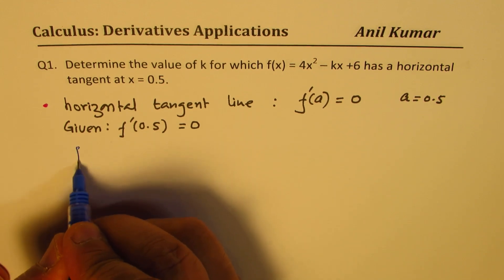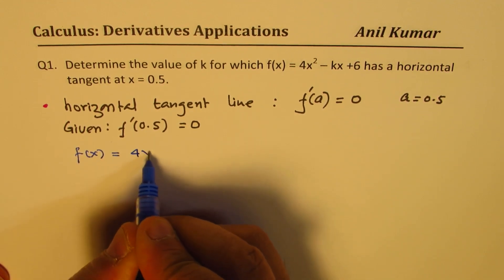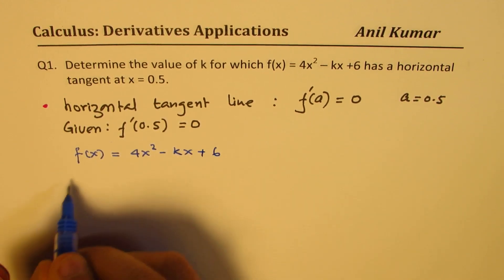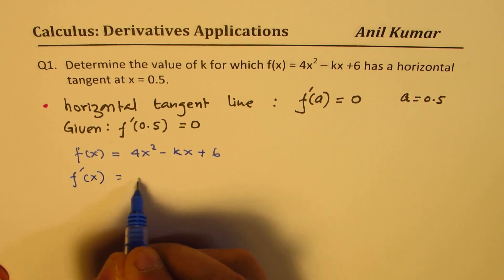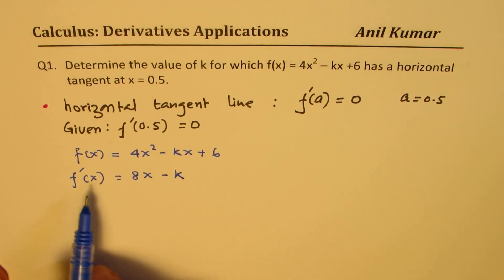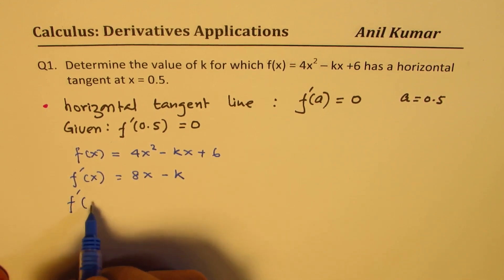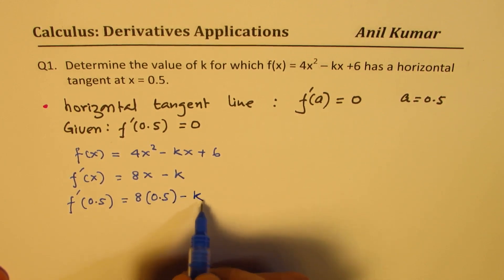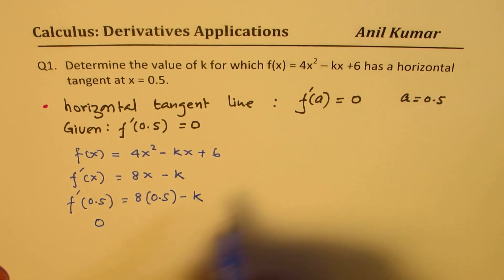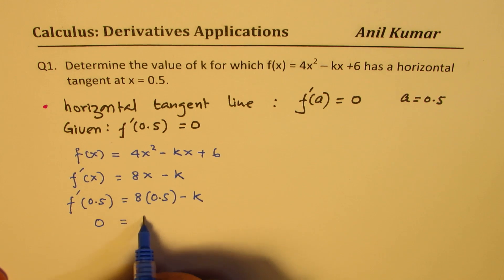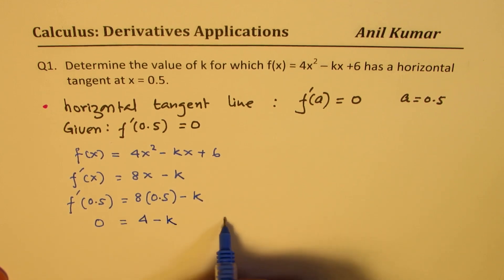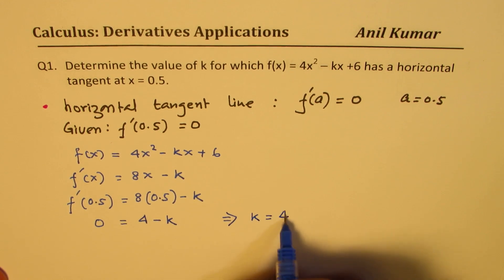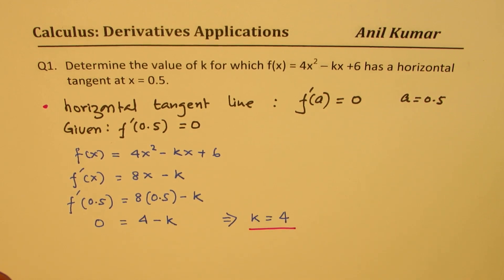The function f of x is 4x squared minus kx plus 6. Its derivative, using the power rule, is 8x minus k, and that equals 0. The derivative at 0.5 is 8 times 0.5 minus k, and this value is 0 since it is horizontal. Half of 8 is 4 minus k, which gives us the value of k equal to 4. So that is how you solve it. Let's move on to the next question.